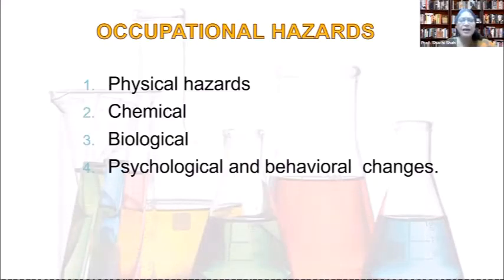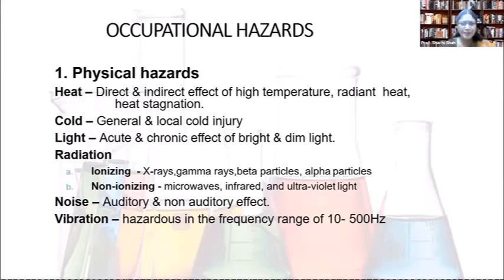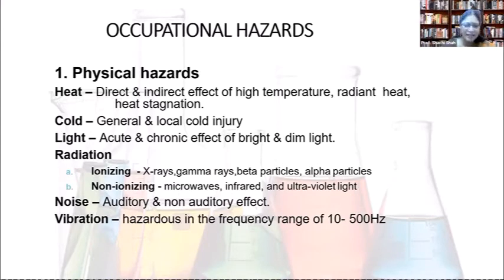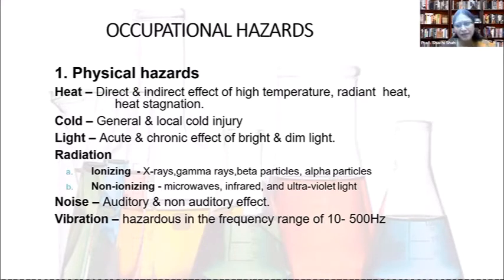Occupational hazards include physical, chemical, biological, psychosocial, and behavioral hazards. Under physical hazards we discuss heat, cold, light, radiation, noise, and vibration. Heat hazards include direct effects of high temperature, radiant heat, and heat stagnation. Cold hazards affect people working in cold storage or other cold conditions, causing general or local cold injury. Light hazards may have acute or chronic effects from bright or dim light, particularly affecting miners' eyes.